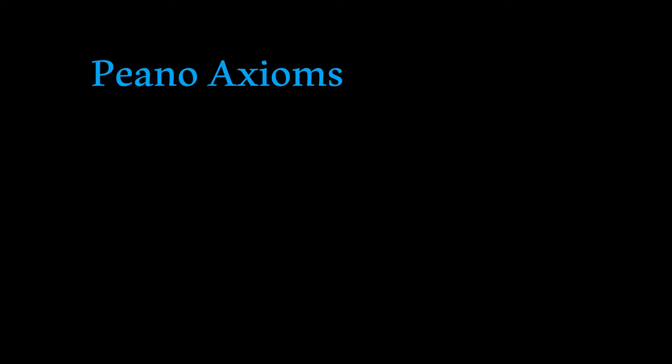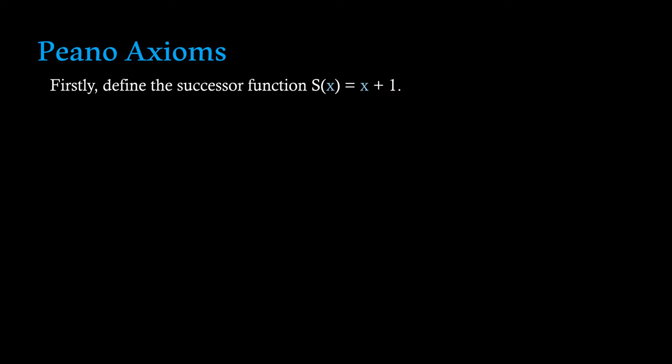Before we define these axioms, we need to establish a key piece of notation. This is something called the successor function. This just takes an input x and outputs the value after it. For example, one is the successor of zero.